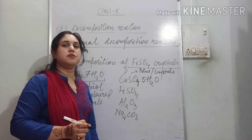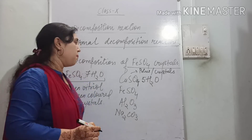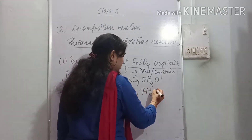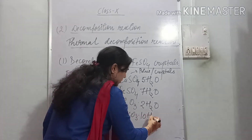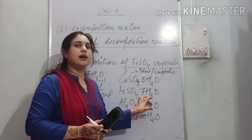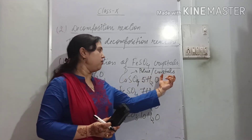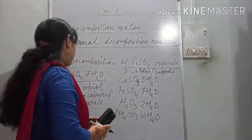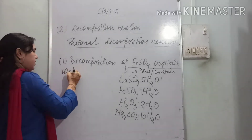Without water — in anhydrous form — copper sulfate is a white powder. But when water is attached it forms blue crystals. Similarly, FeSO4 has 7H2O, CuSO4 has 5H2O, and some compounds have 10H2O — every compound has a different number of water molecules attached. These water molecules, which give a compound its crystalline form and color, are known as water of crystallization.